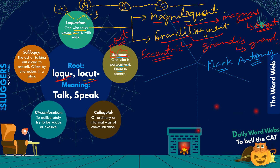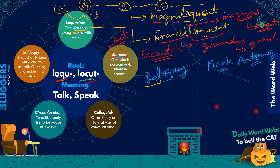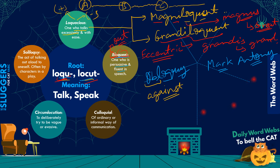Another term from this root is obloquy. The later part comes from today's root; the first part 'ob' is a Latin term that stands for 'against.' So an obloquy is basically a speech you give against someone — condemning or criticizing someone, generally in public. When you are condemning or criticizing someone publicly, that would be an obloquy.